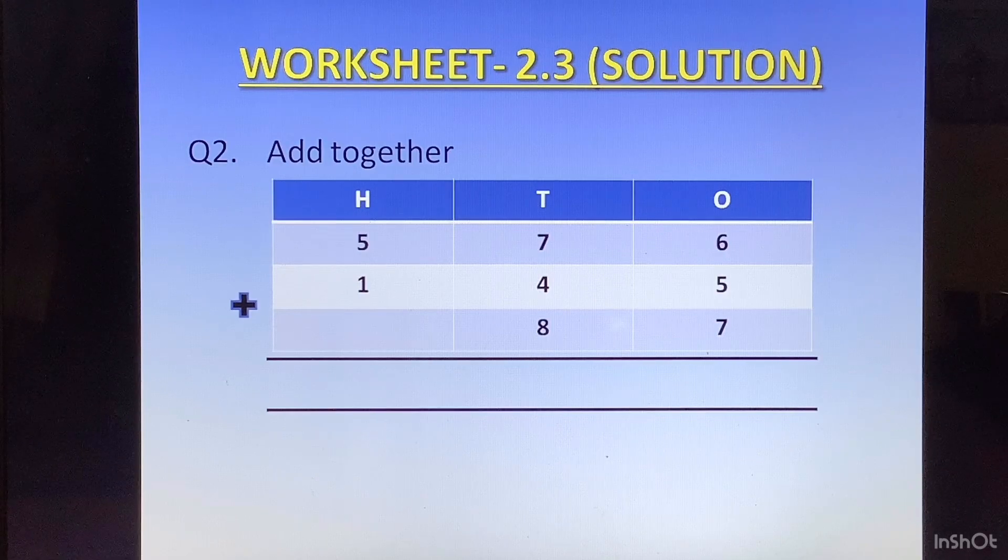Question 2. Here we have 576 plus 145 plus 87. Now here students, I want you to take a minute and look at the last number 87. See how it is written.